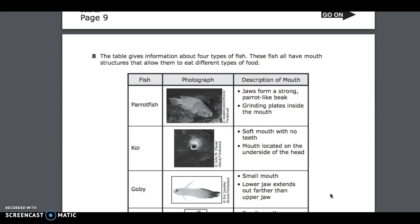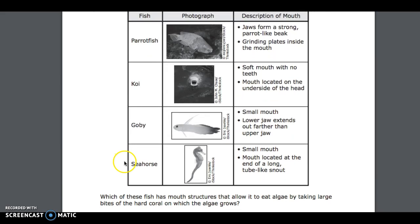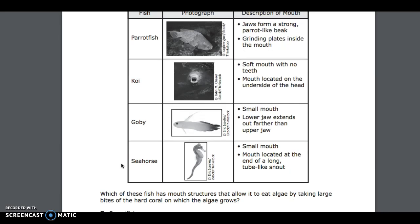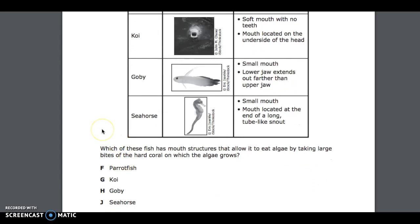Number 8. The table gives information about four types of fish. These fish all have mouth structures that allow them to eat different types of food. Fish: Parrotfish, jaws form a strong parrot-like beak, grinding plates inside the mouth. Koi, soft mouth with no teeth, mouth located on the underside of the head. Goby, small mouth, lower jaw extends out farther than upper jaw. Seahorse, small mouth, mouth located at the end of a long tube-like snout. Which of these fish has mouth structures that allow it to eat algae by taking large bites of the hard coral on which the algae grows? F, Parrotfish; G, Koi; H, Goby; J, Seahorse.